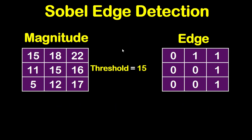In the final step, we get the edge matrix using the magnitude matrix and the threshold of 15. If a value is greater than 15, it is set to 1, meaning it has an edge; otherwise it is set to 0, meaning it is not an edge. For example: 15 is not greater than 15, so it is 0; 18 is greater than 15, so it is 1; 22 is greater than 15, so it is 1; 11 is not greater than 15, so it is 0, and so on. This is the final edge matrix.